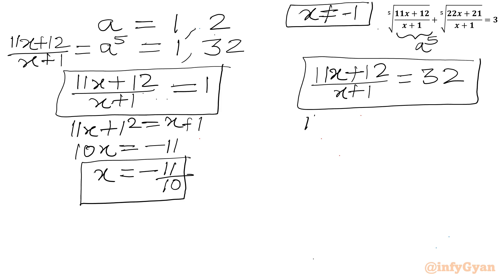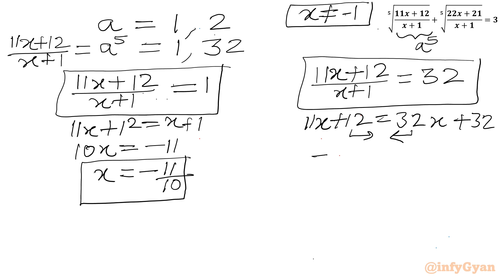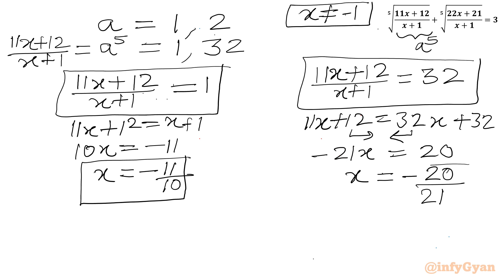For the second equation with a equals 2: (11x plus 12) over (x plus 1) equals 32. Cross multiplying: 11x plus 12 equals 32x plus 32. Taking the x terms to the right-hand side: negative 21x equals 20, so x equals negative 20 over 21. This is our second real solution.